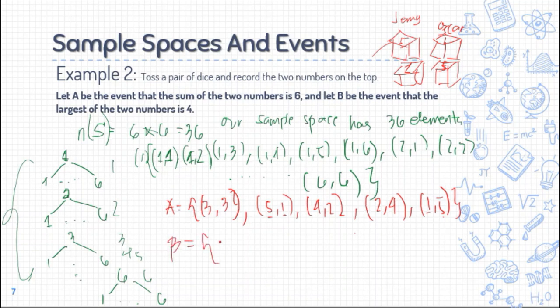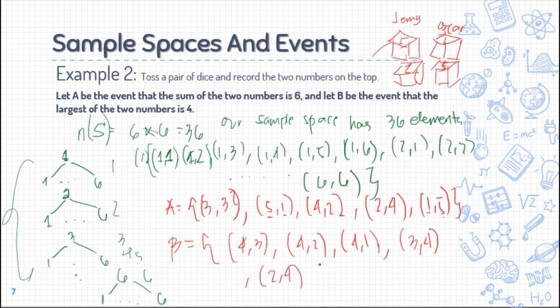Now our set B are those sets where the largest is 4. So it could be (4,3), it could be (4,2), it could be (4,1). Again, reversing them: it could be (3,4), it could be (2,4), and it could be (1,4). And the largest of the two numbers - it could be (4,4), since both have 4 as the largest. Here is our set A and our set B.